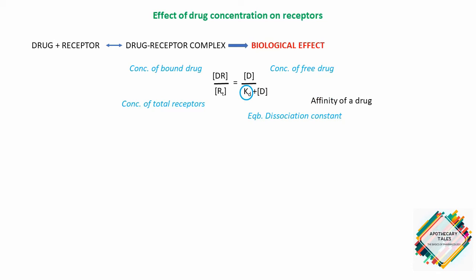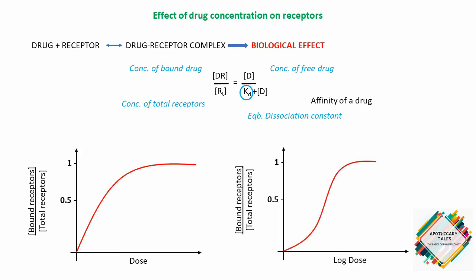The equation defines a curve shaped like a rectangular hyperbola. As the concentration of the free drug increases, the ratio of bound receptors to total receptors approaches unity. The binding of the drug to its receptor initiates events that ultimately lead to a measurable biological response, which is why the curves representing receptor binding and dose-effect relationships are usually similar.